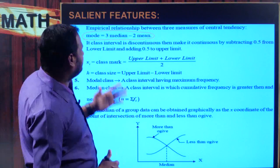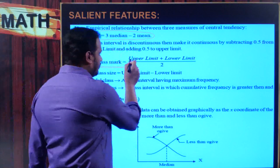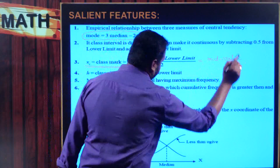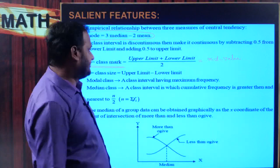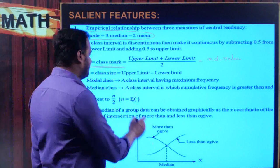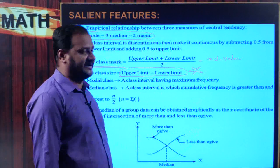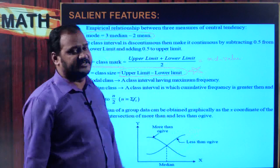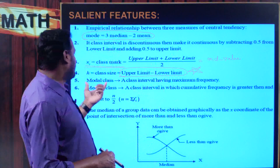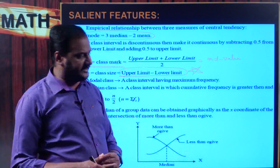Class mark or mid value of the class interval is lower limit plus upper limit divided by 2. Class size, otherwise length of the class interval, is upper limit minus lower limit — though this is not always exactly the class size; we will explain that. Let us now get into the problems and understand how to solve them.